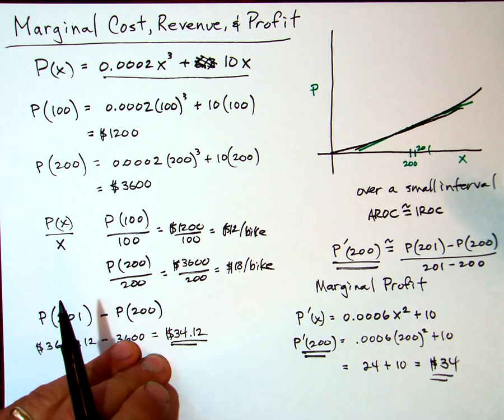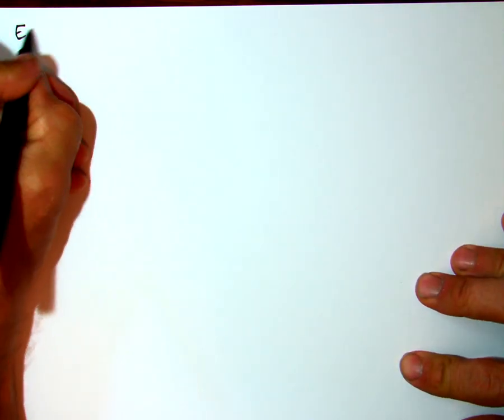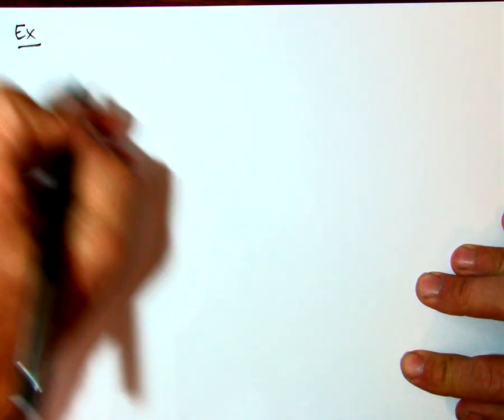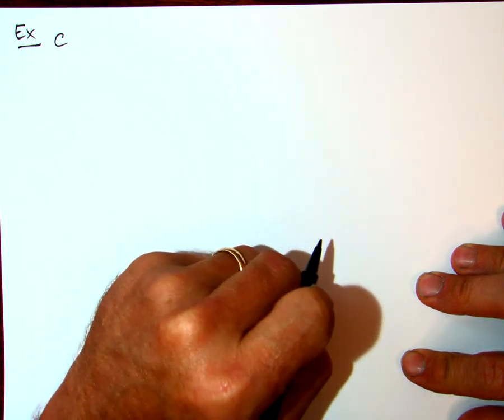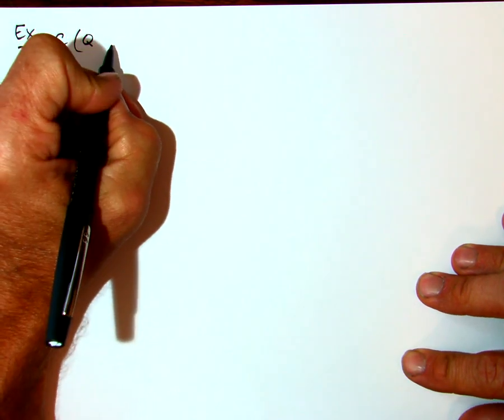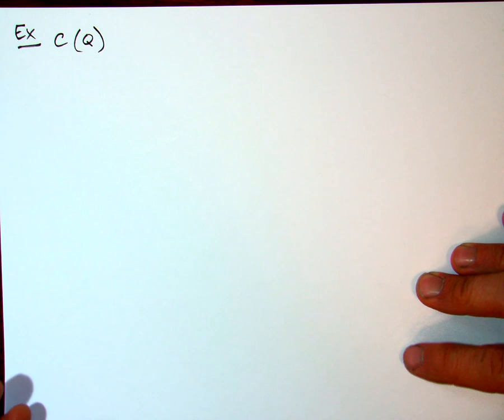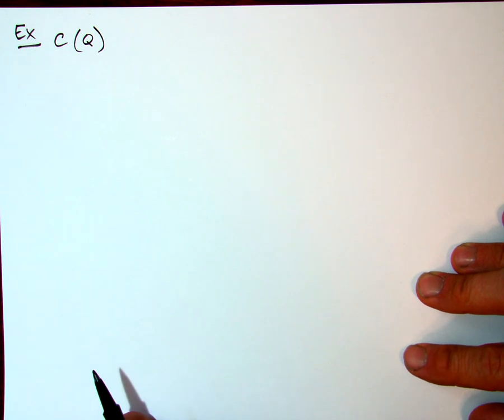Let me just give you one more example using marginal cost. Just another example here. Let's say we're going to have cost—this is an annual inventory cost, where Q is the order size when the inventory is replenished. So let's say we're storing a lot of stuff. We have a certain amount of inventory. It costs a certain amount of money to store that inventory. And the equation or function we're going to use here...